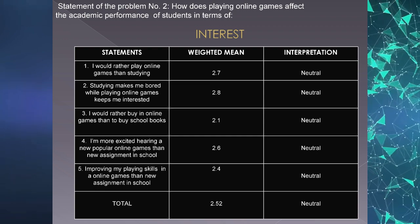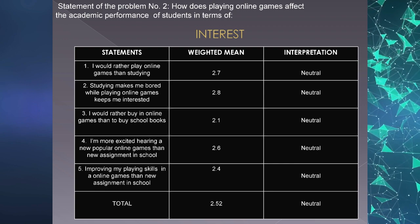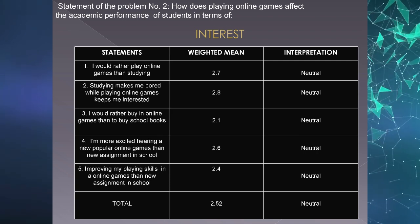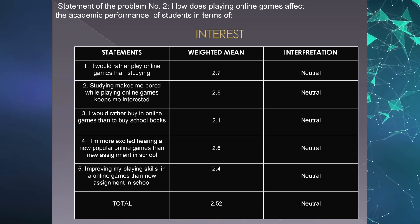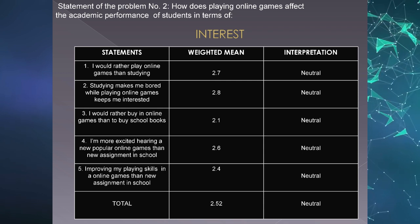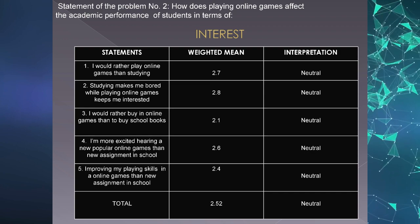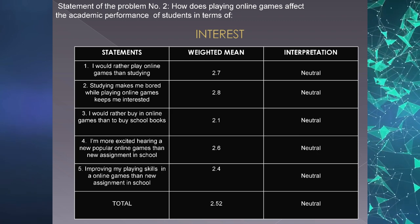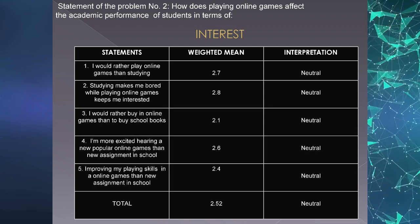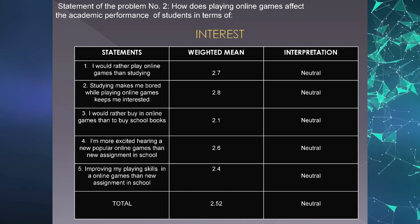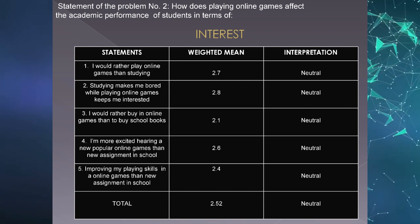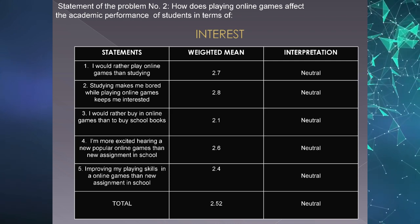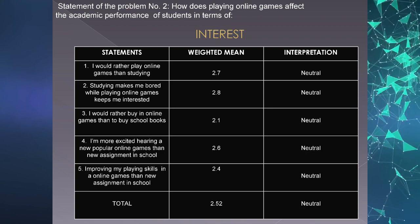In computing the data, the researchers used the formula for weighted mean for every statement. Table 1 shows the overall weighted mean of all statements under interest. Senior high school students are either into playing games or studying, with a weighted mean of 2.8. Students are either bored with studying or find online games more interesting, with a weighted mean of 2.7. They are impartial between a new online game and a new school assignment, with a weighted mean of 2.4. With a weighted mean of 2.1, students are either improving skills in online games or in school, and either spending on online games or school books.